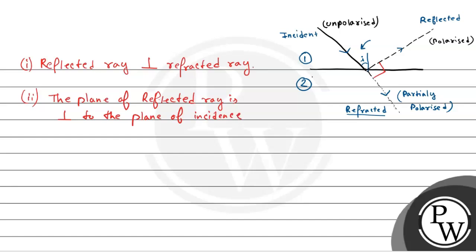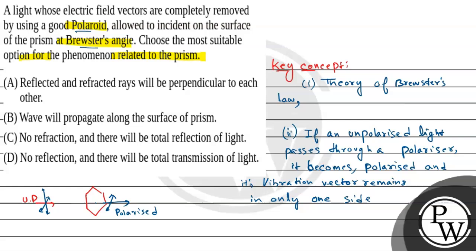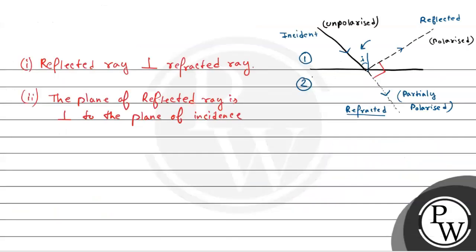Now, here the light is passing through a polaroid, so only one side has vibration vector. So, if only one side has vibration vector, that means it is already a polarized incident ray. So, reflected ray will be zero, because the perpendicular component of incident light has become zero, so reflected light will be zero.